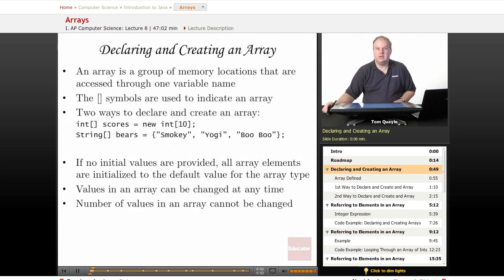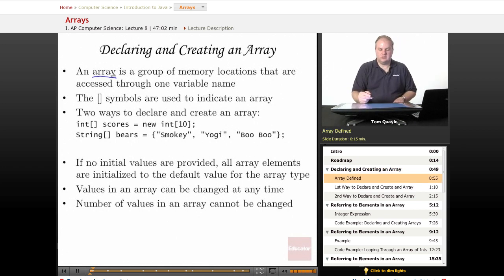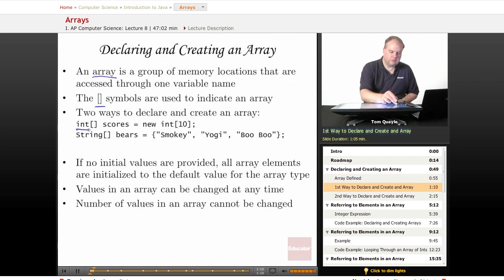First of all, declaring and creating an array. An array is a group of memory locations that are accessed through one variable name. The square bracket symbols are used to indicate an array. And there are two ways to declare and create an array. We first declare an array with the square brackets after the data type of the array, followed by the name that we want to use to refer to the array. That is declaring an array.